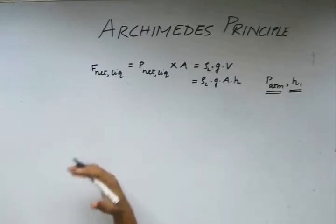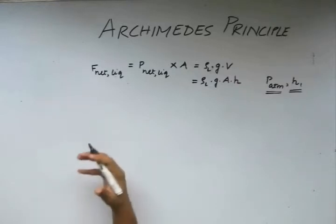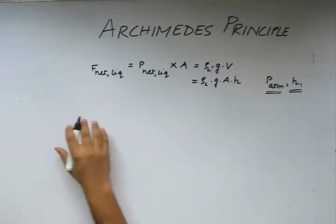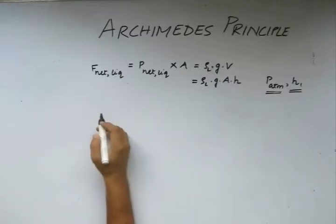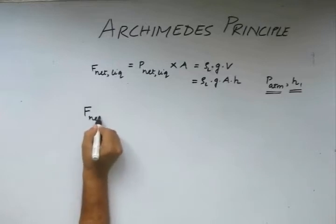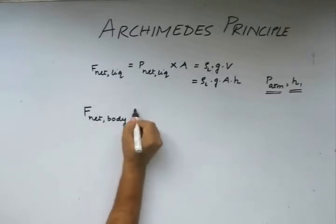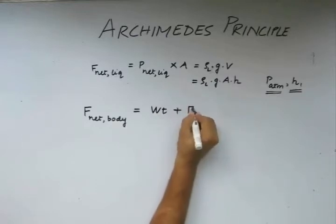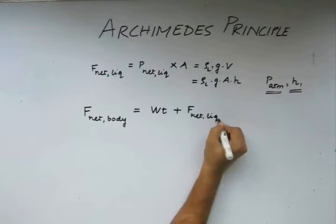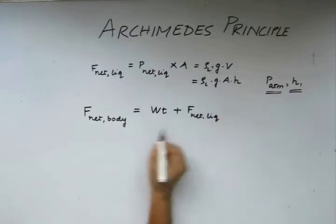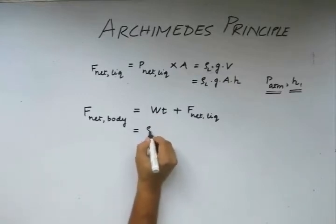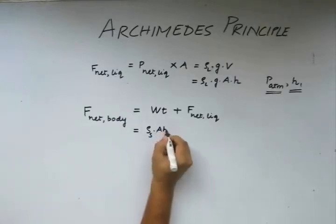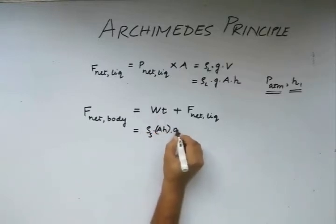Now let's say we consider the net force on the block. We have considered the pressure difference and the force due to the pressure difference on the body. The net force on the body will be its weight plus the net force due to the pressure difference, or the pressure applied on the body due to the liquid. The weight of this body will be rho_s — since we assume the density of the solid is rho_s — into the volume occupied by the body, giving us mass times the acceleration due to gravity.